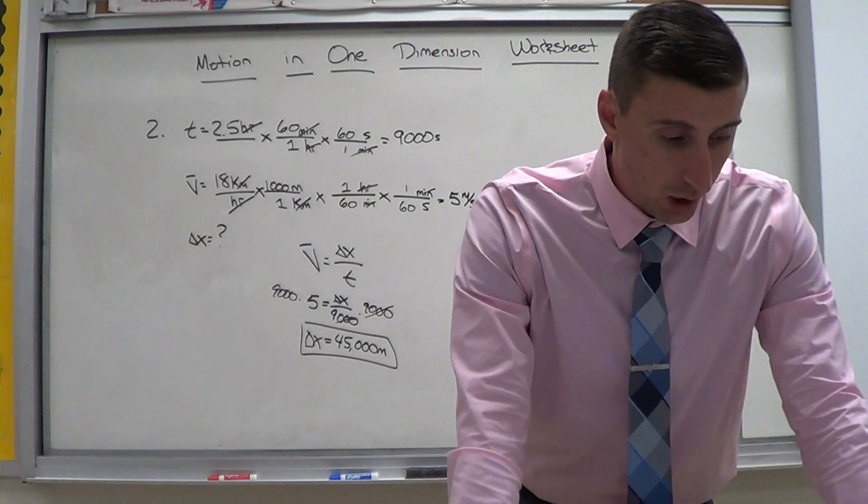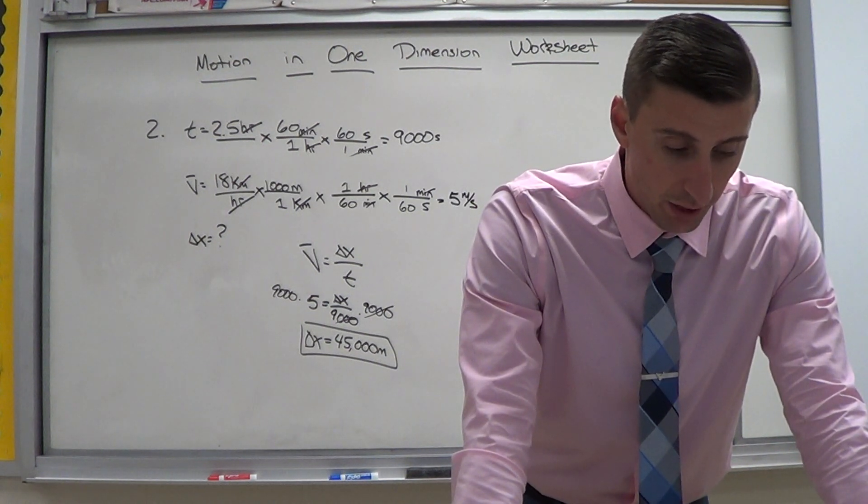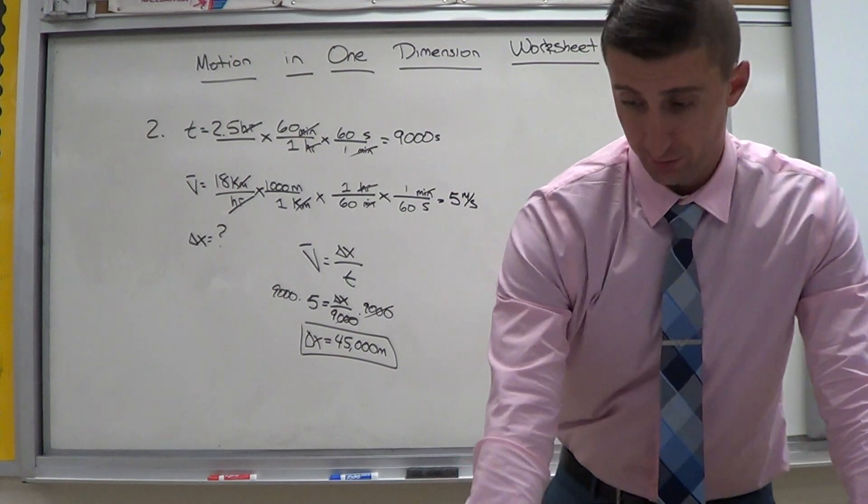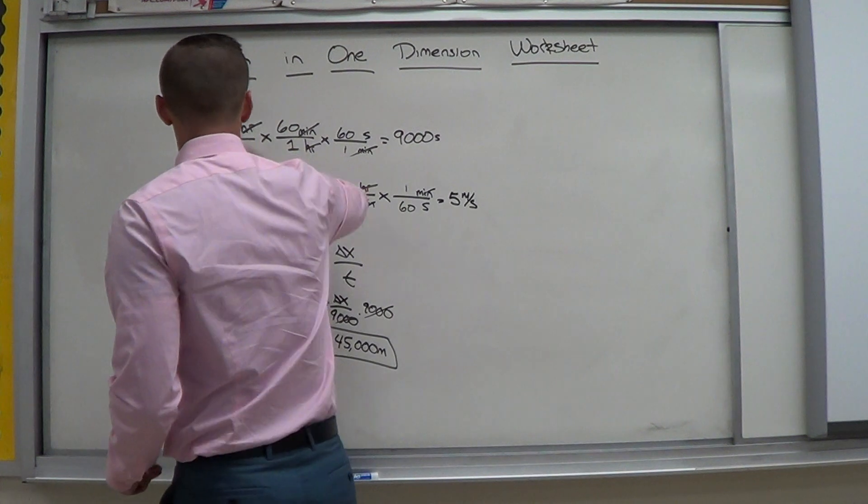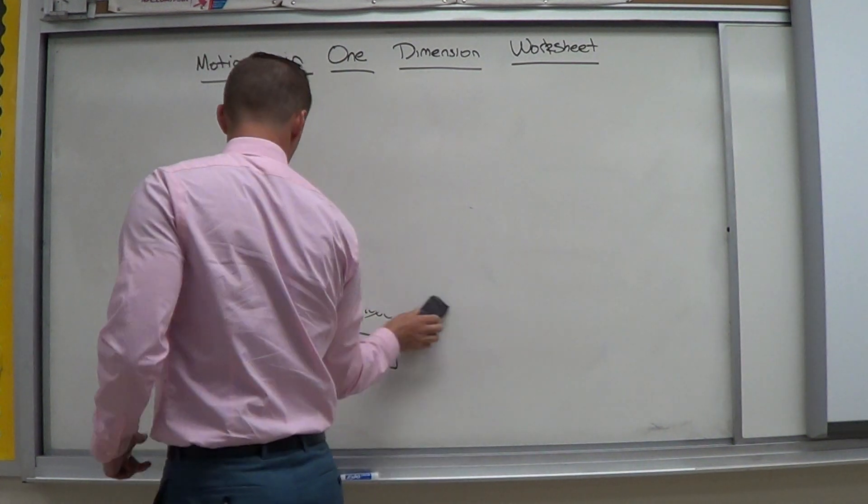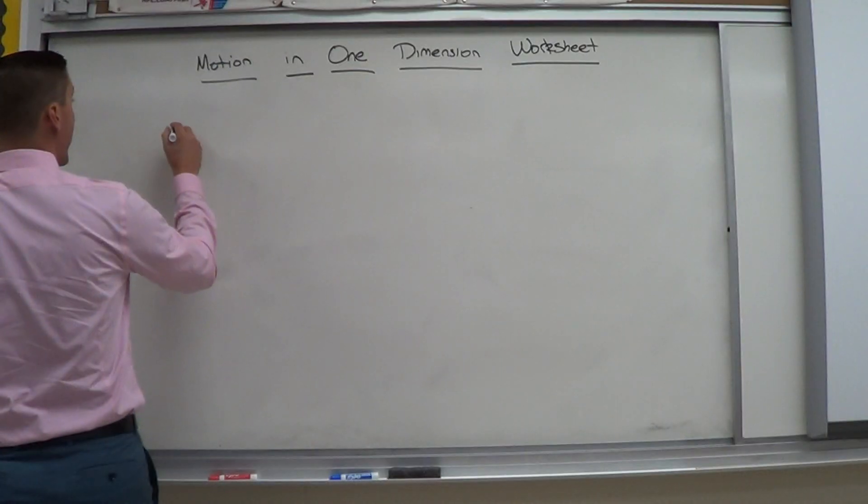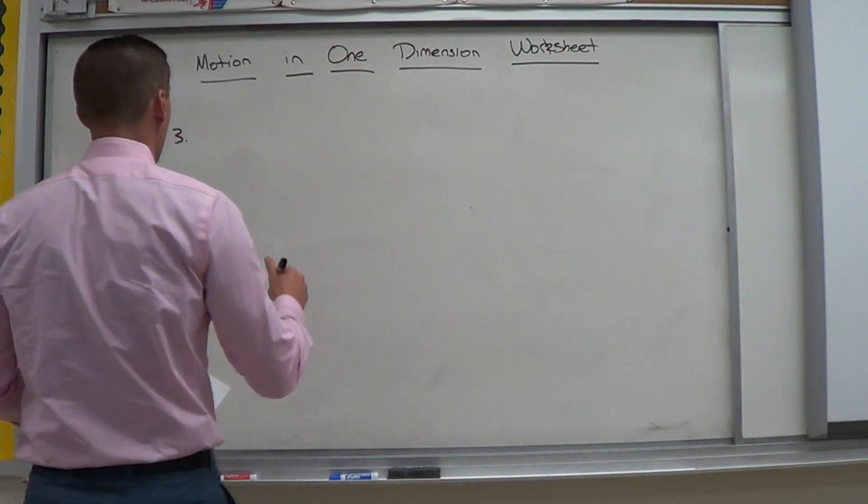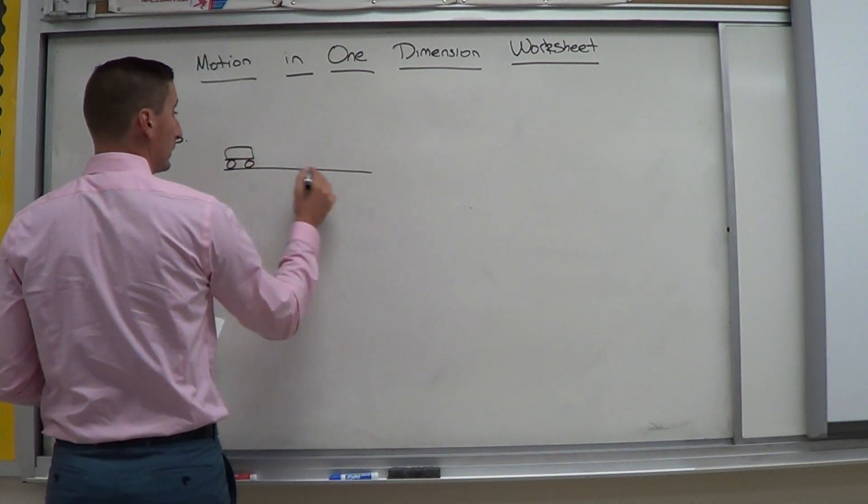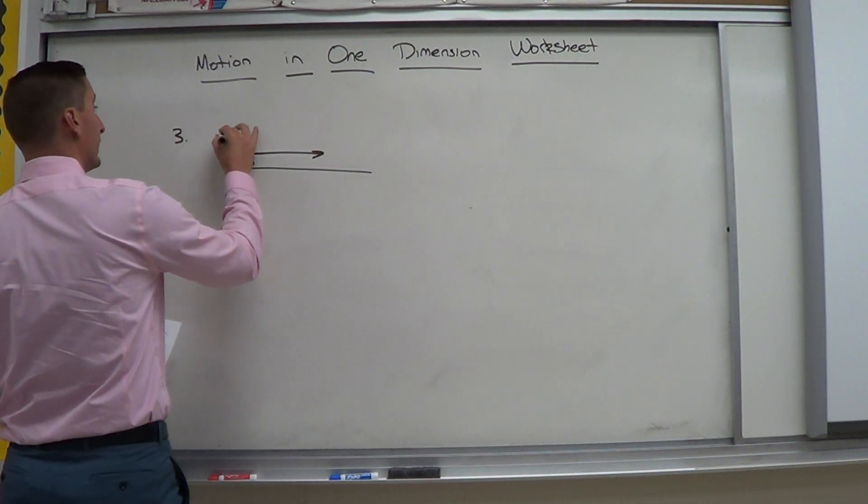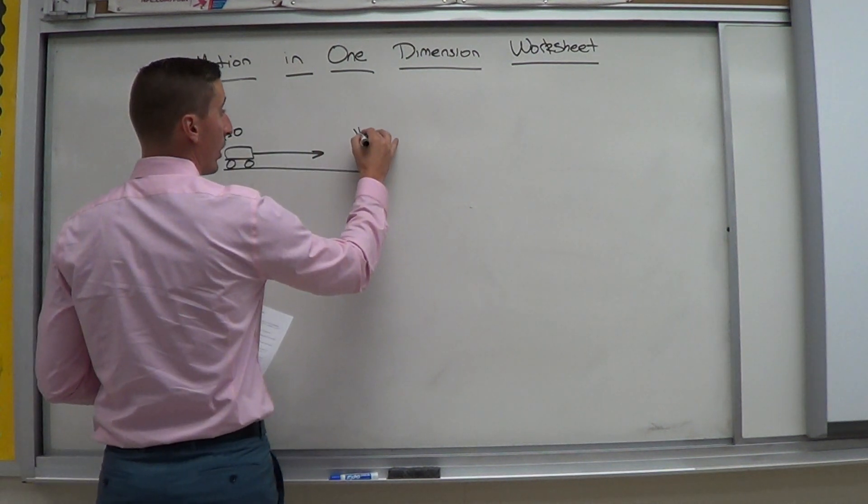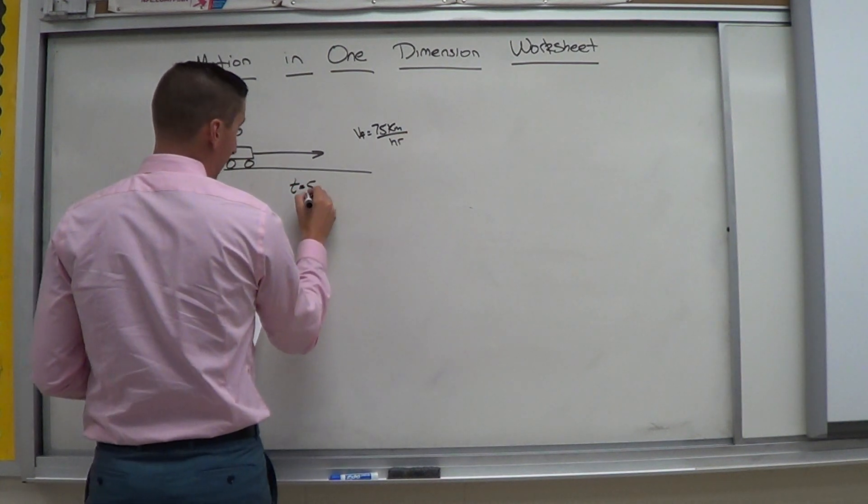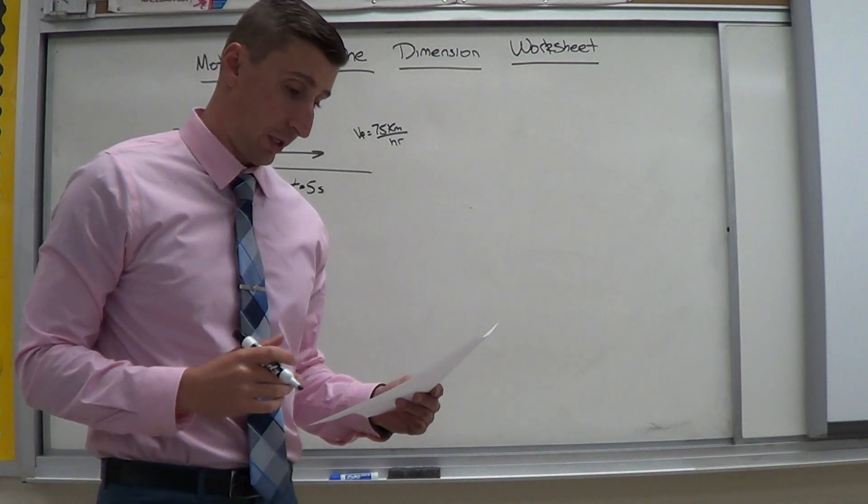Alright. So let's go ahead on to number 3. It says a car accelerates along a straight road to 75 kilometers per hour in 5 seconds. What is the magnitude of its average acceleration? Okay? Let's go ahead and do this one here. So number 3. So we're going to assume the car starts from rest. Right? So when we draw this picture here, it's going down the road. It starts from rest. So I know vi at this point is zero.